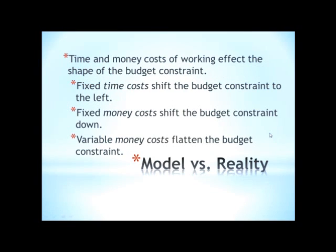Another thing that our model didn't include, but is very easy to build in if you want to, are the time and money costs of working. The time costs of working involve, for example, the commute. If it's a fixed time cost — a certain amount of time that you spend commuting each week — then all you do is take that budget constraint we looked at last time and shift it to the left. Rather than starting with 100 available hours, you start with, say, 90 if you spend 10 hours a week commuting. That's just a leftward shift of the budget constraint, which will obviously lead to a different optimal choice and lower utility.